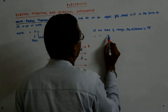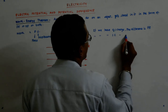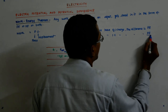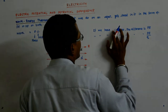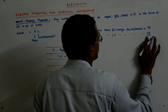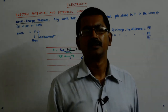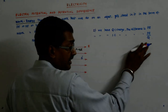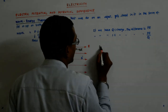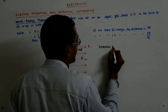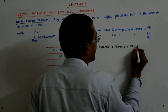If we take Q Coulombs of charge, the difference is potential energy. Now if I take one Coulomb of charge, the difference is PE upon Q — unitary method. When I move one Coulomb of charge the difference is called potential, and this is equal to that.